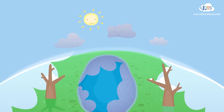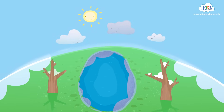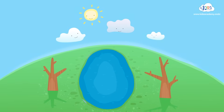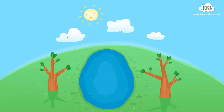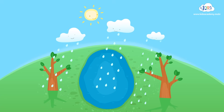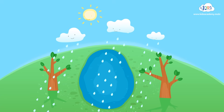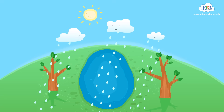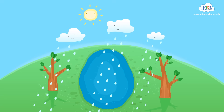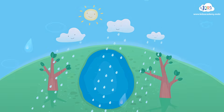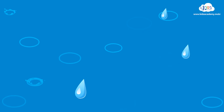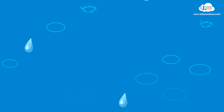Spring is here. Snow and ice melted in the sun. In spring, rain falls from the clouds. Spring rain goes away soon and tiny raindrops end up in lakes.